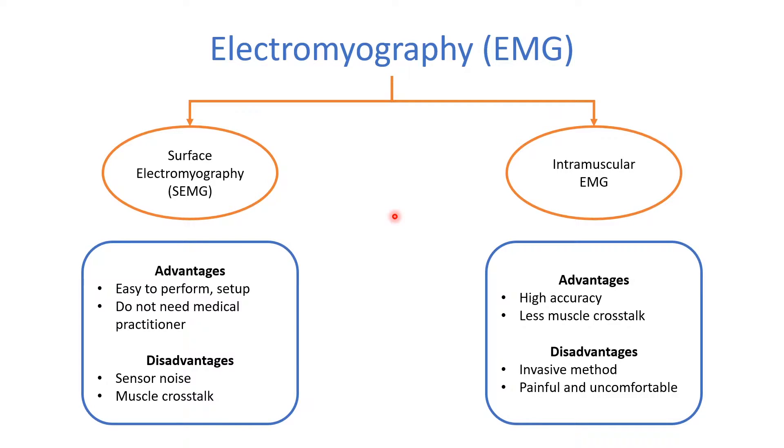EMG is usually split into two main types. You have SEMG and intramuscular EMG which is an invasive method. In intramuscular EMG, the electrode which is usually in the form of a needle is injected into the muscle and it follows the muscles movements with its contractions and as it relaxes. Because the electrode is injected into the muscle, you would get significantly better accuracy, low sensor noise, less muscle crosstalk, less distortion. But the obvious disadvantage would be it's painful and it can cause significant discomfort to the person. Due to these reasons, it's rarely used. And if it is used, it's for muscles that are deep within the body.